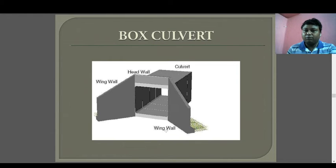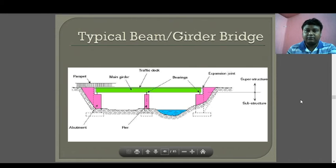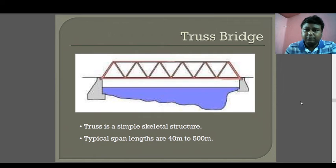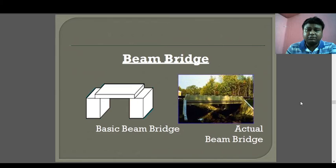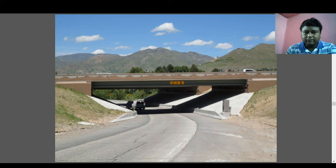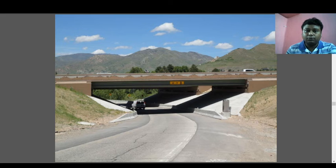A box culvert is found in many places. A typical beam girder bridge has a span of 10 to 200 meters. This is a simple type of truss bridge and simple beam bridge. A retaining wall or supporting wall is provided to support the load.